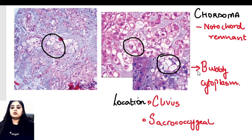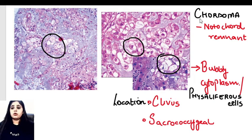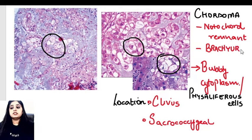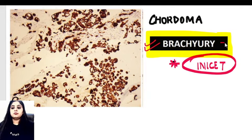When you look at the tumor under the microscope, the cells are going to show you bubbly cytoplasm. The name given to these cells is physaliferous cells. So if physaliferous cells or this picture with bubbly cytoplasm is mentioned in the paper, along with one of these locations, you know you're dealing with a chordoma. The gene mutation seen is brachyury, also known as the T gene, located on chromosome 6. As a result of this brachyury gene mutation, if asked about immunohistochemistry, the tumor is brachyury positive.